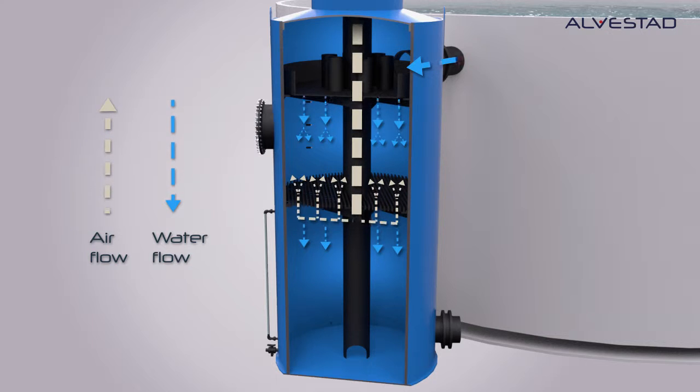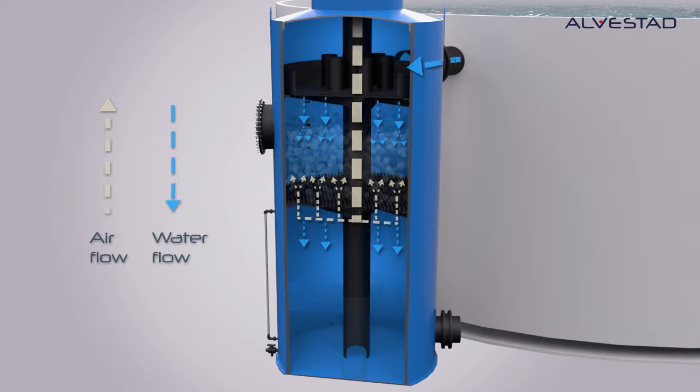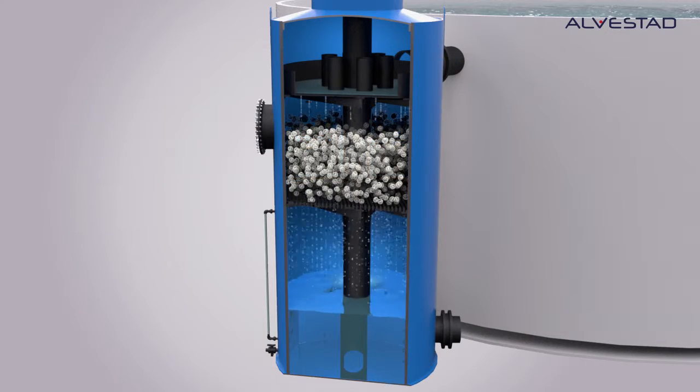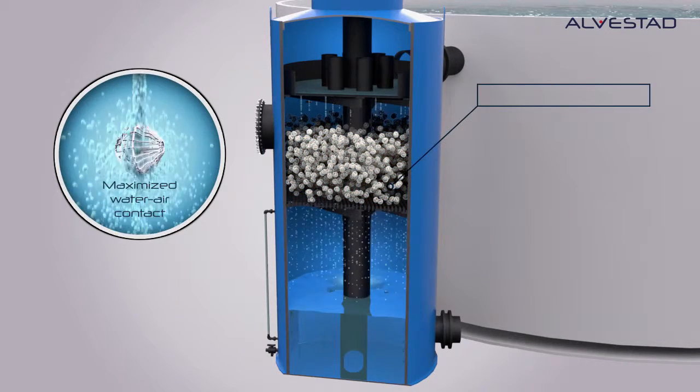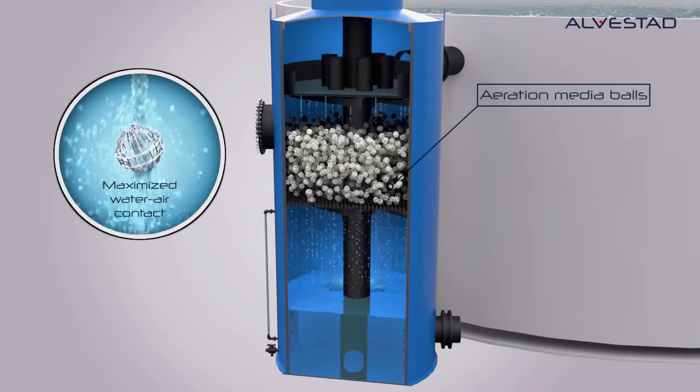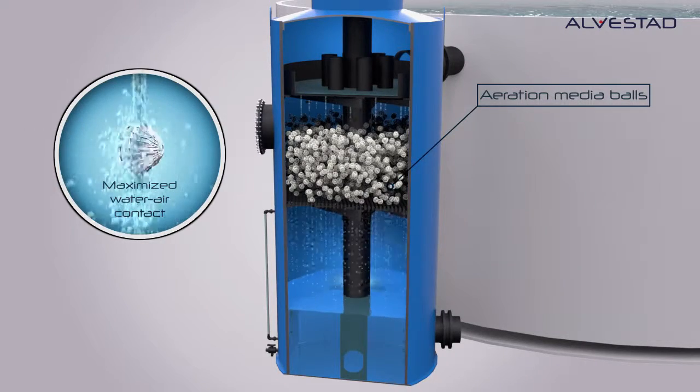A low-pressure fan pumps air upwards through the media, making a counter-current in the aeration chamber. The water is split into small droplets, giving an extremely large contact surface to air.